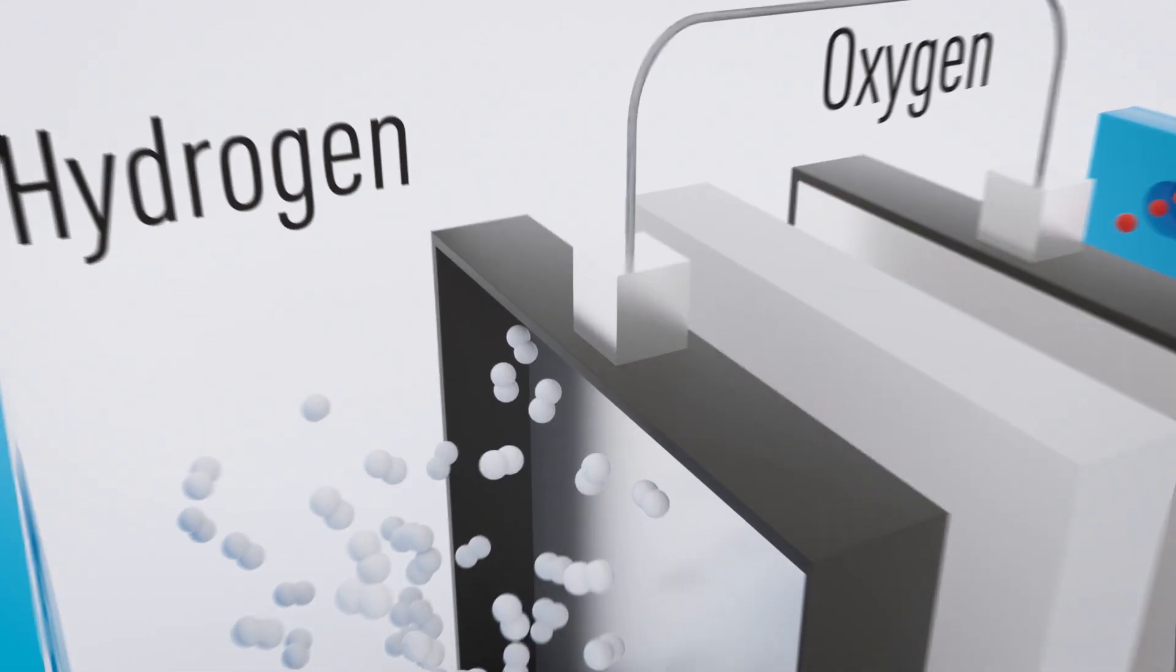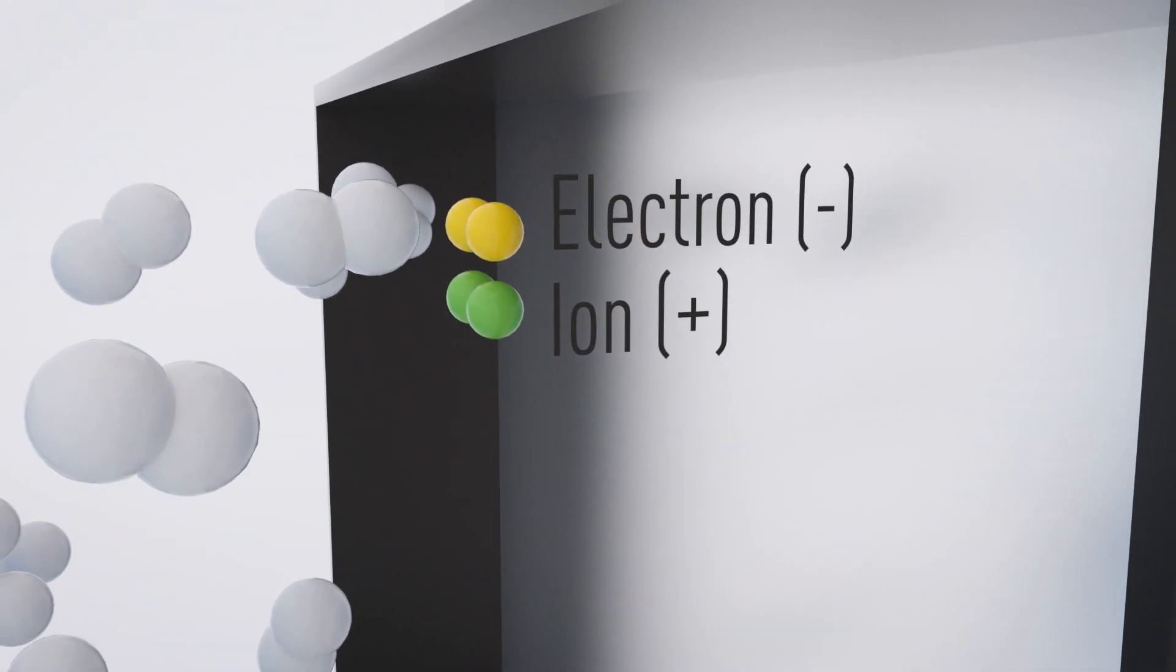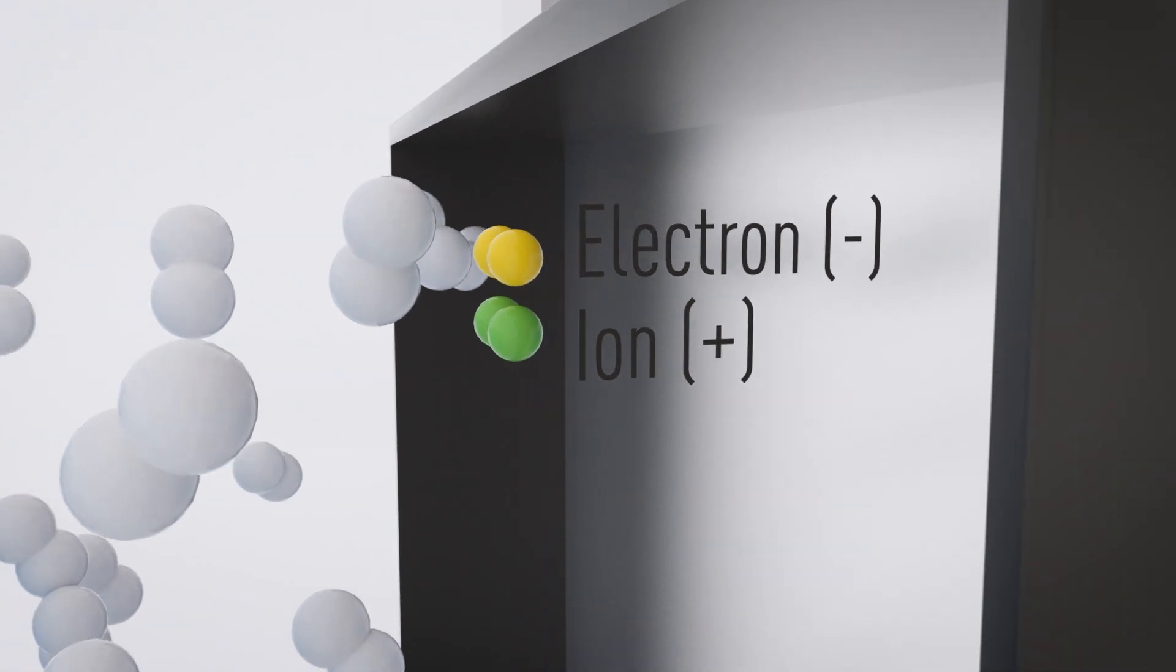Inside the anode, a platinum catalyst splits the hydrogen molecules into positive hydrogen ions and negatively charged electrons.